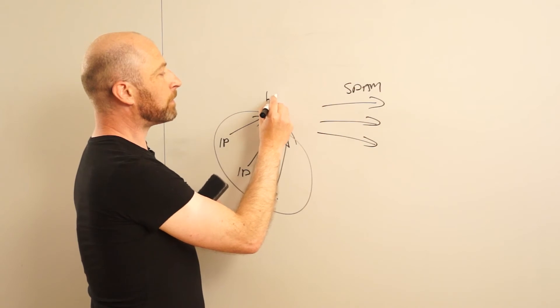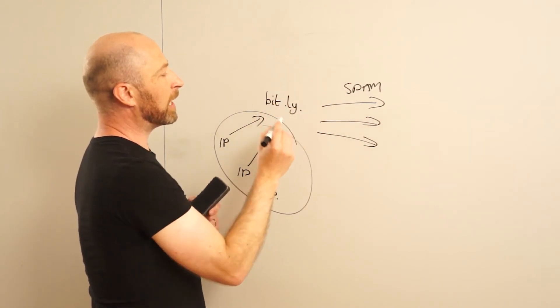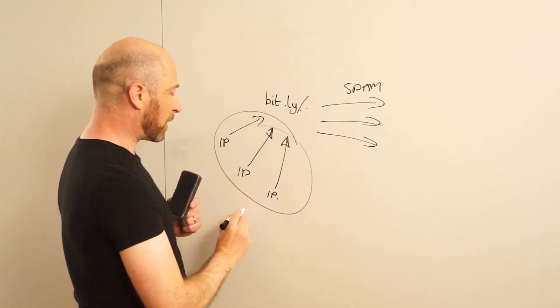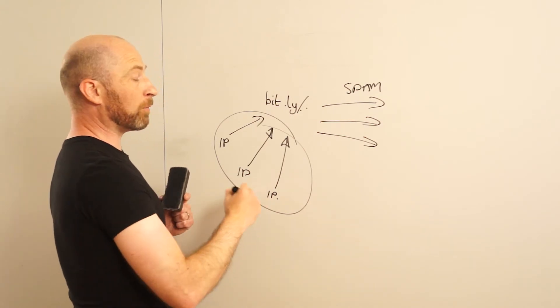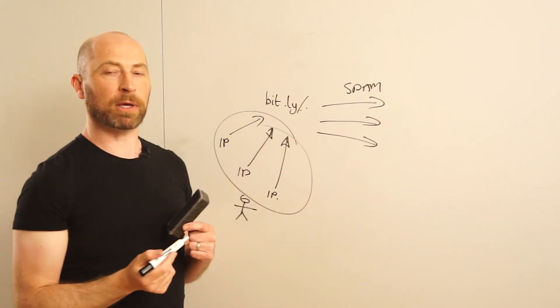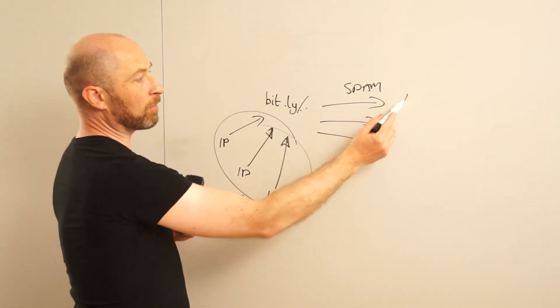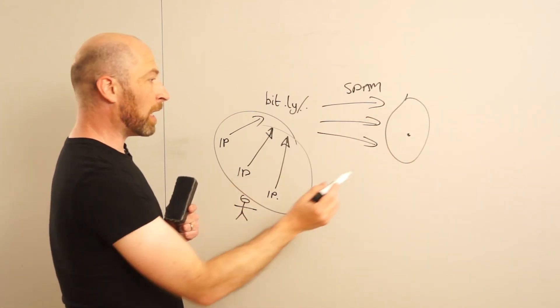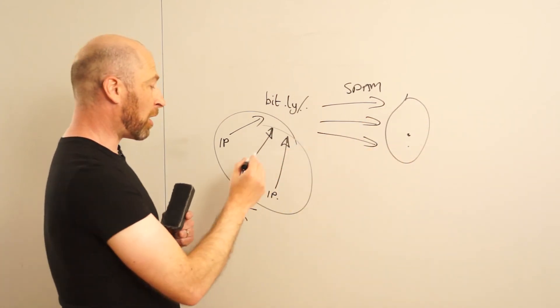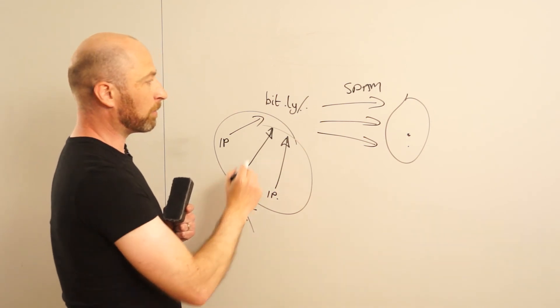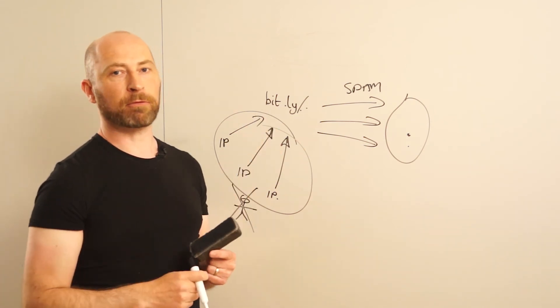So in order to shut down this bad guy from creating these links and then sending spam with those links, they need evidence of what that spam is. And they get that evidence from Cloudmark so they can go back and stop the bad guy from creating those links in the first place, which means less spam for everyone.